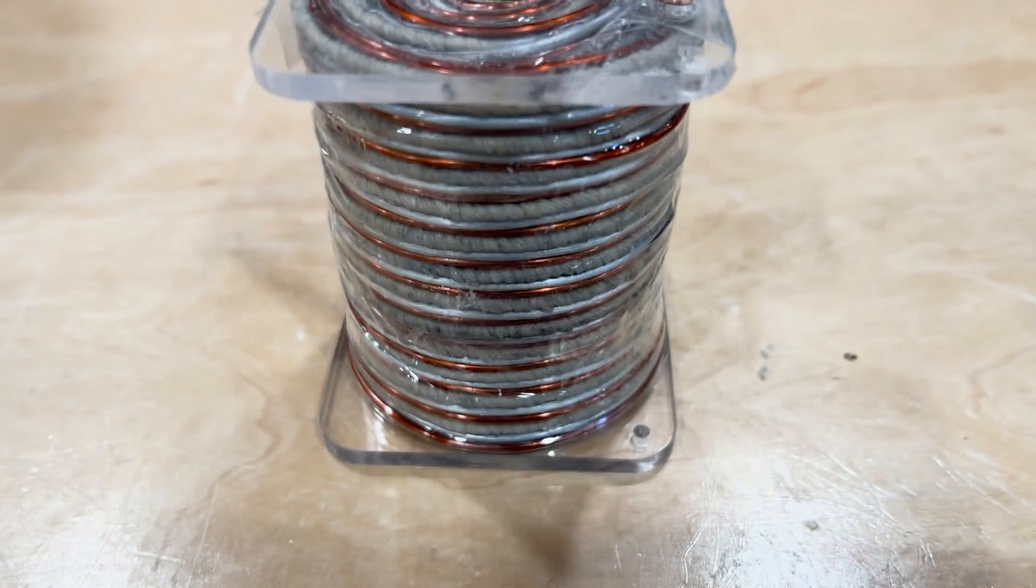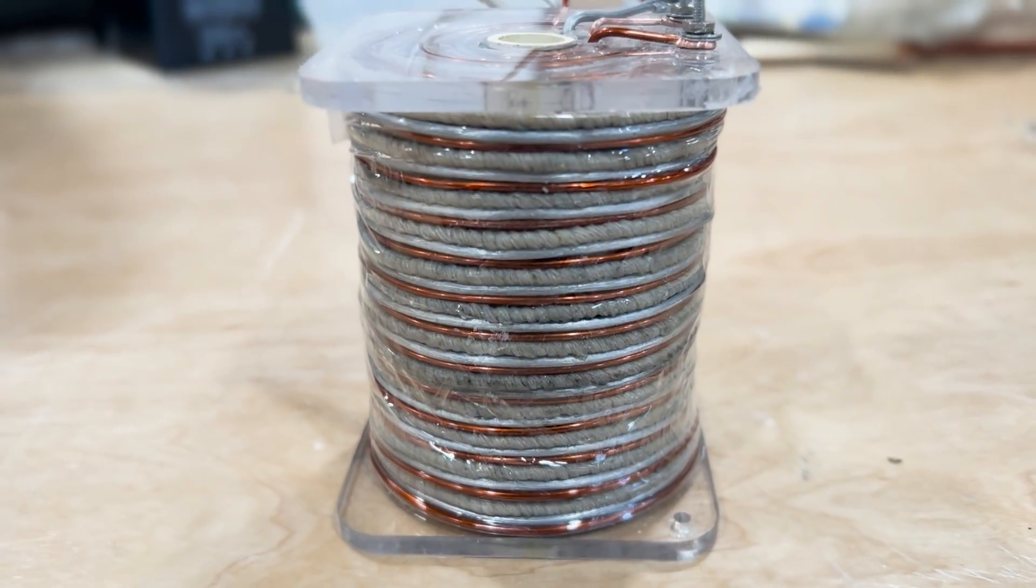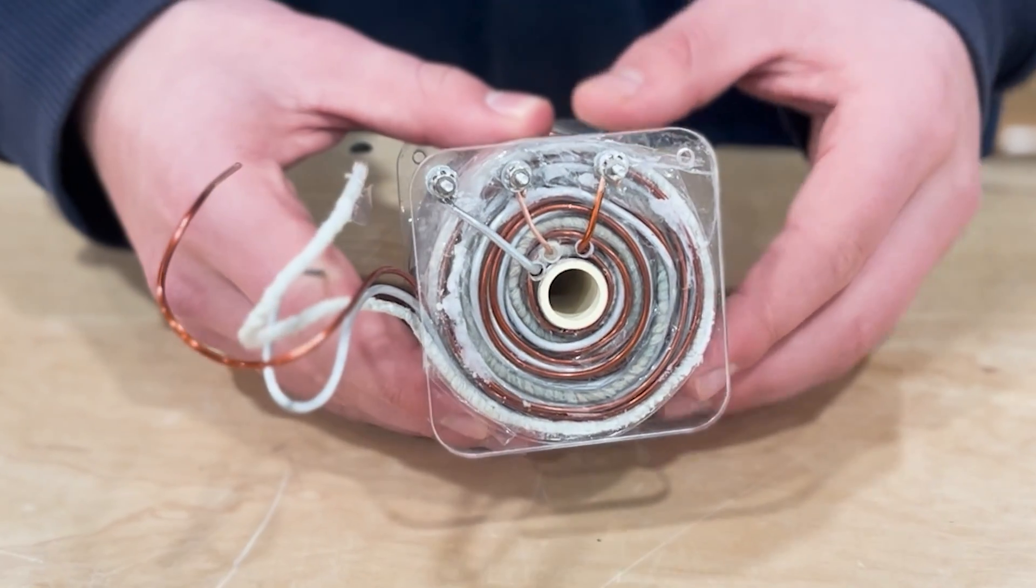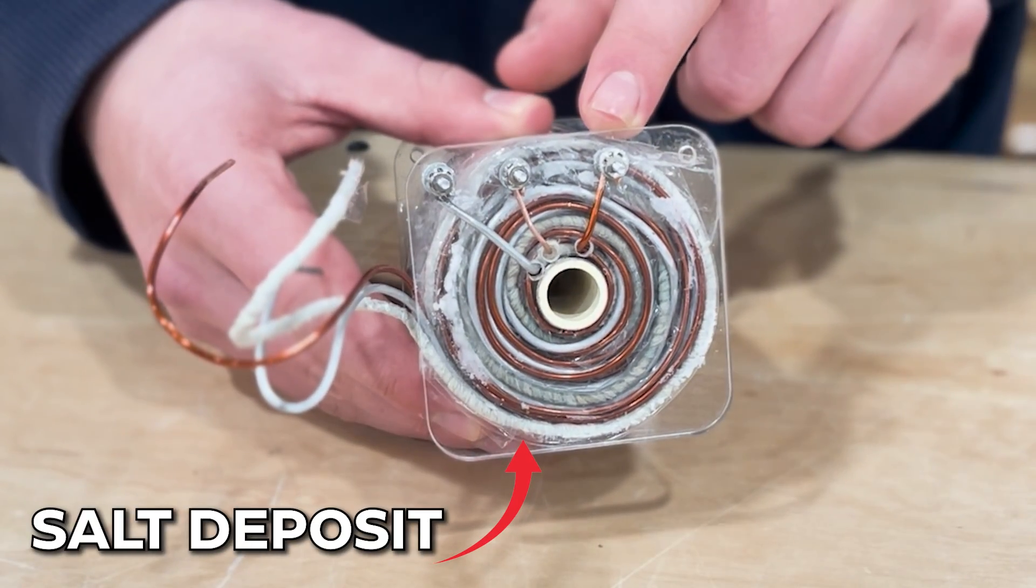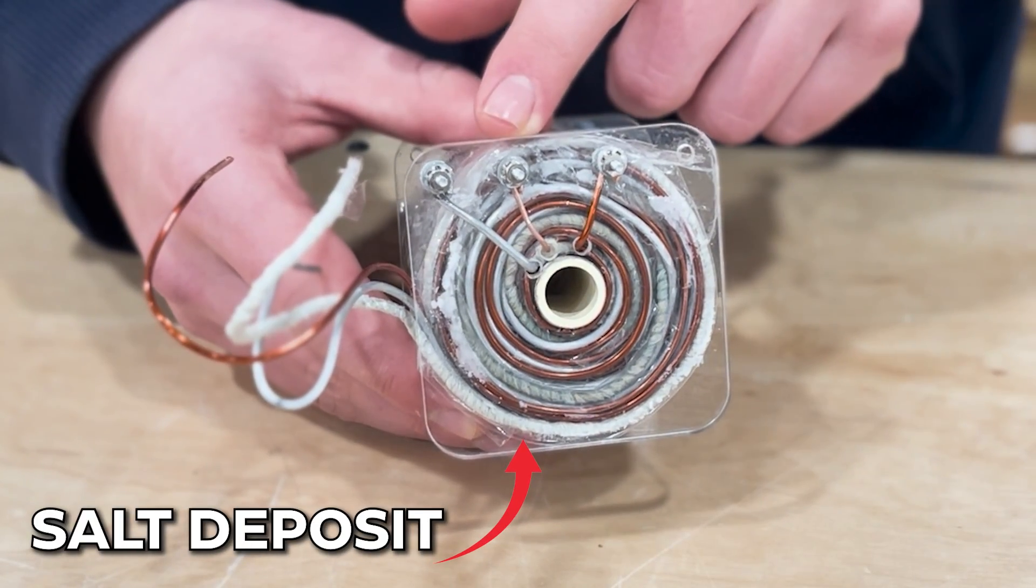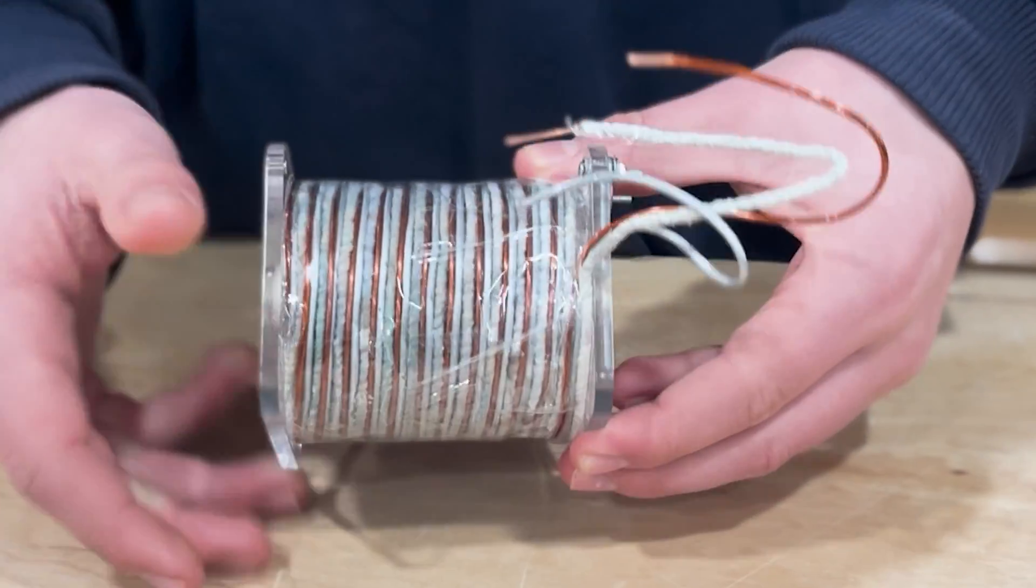The wires need to be crisscrossed. If they're crisscrossed one way, the coil will generate north polarity and push the permanent magnets away. If it's connected another way, the coil generates a south polarity and attracts the permanent magnets instead.